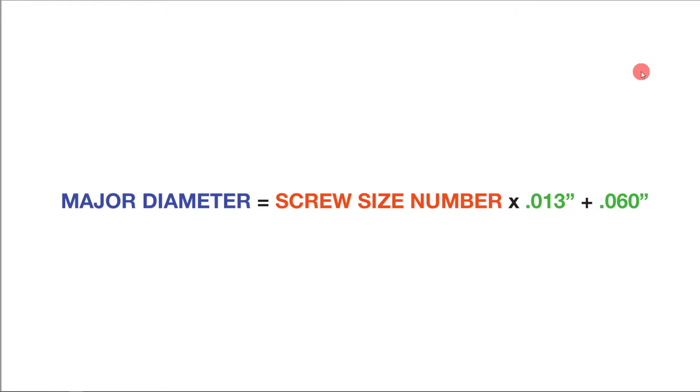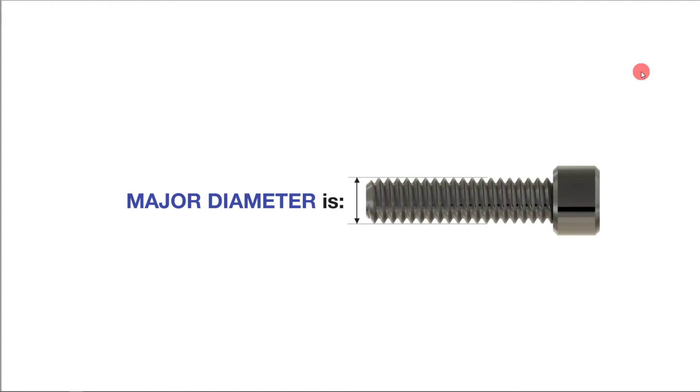So what is major diameter? Well major diameter is what you're seeing right here. It's the largest dimension that you can take of the thickness of the screw. It's from the crest of one of the teeth all the way to the crest of the other side of that tooth.